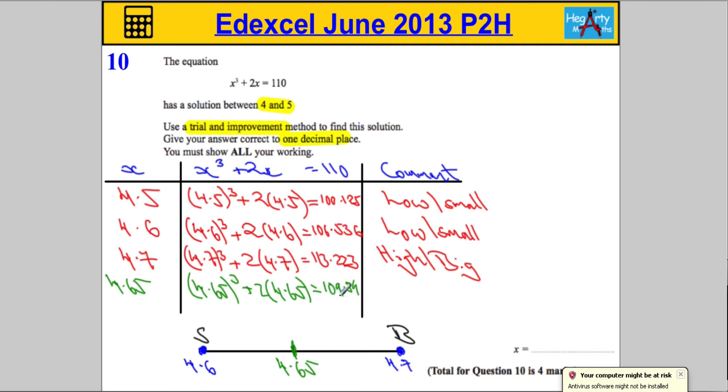And remembering this was too small, this was too big, then the answer 109.84 in comparison to 110 is too small as well, which means that my answer, the actual answer, the exact answer, has to be somewhere in here, somewhere between these two numbers. So if I was choosing an answer to one decimal place, it must be closer to this guy here, which means x is going to be equal to 4.7. And we're done.